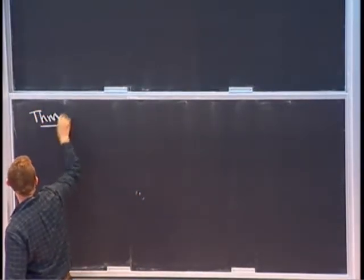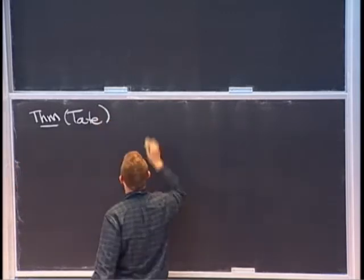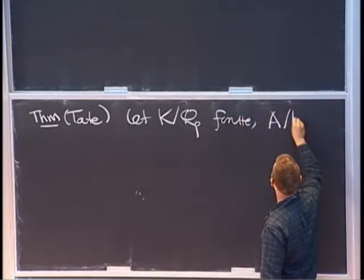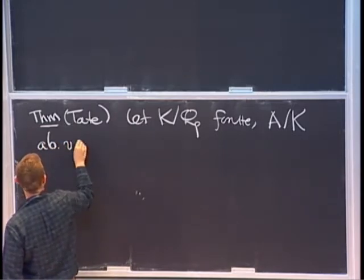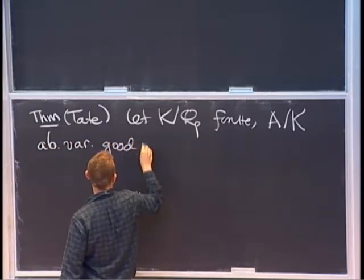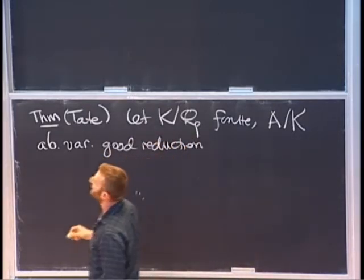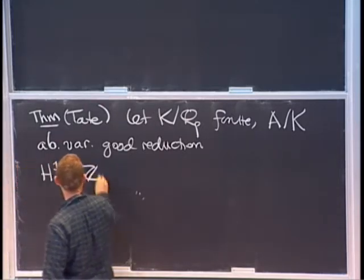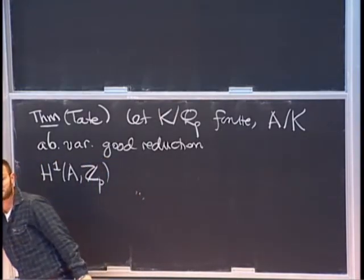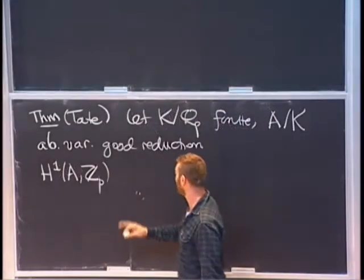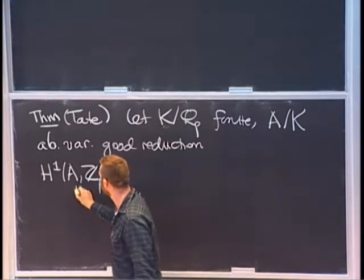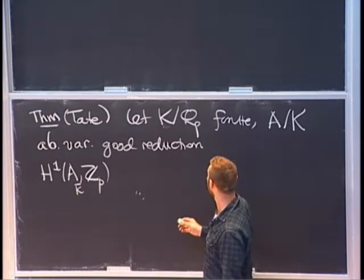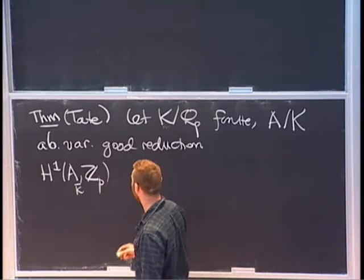Here's Tate's theorem. Let K over ℚ_p be finite, and let A over K be an abelian variety with good reduction. Then it's going to be the analog of the statement about H¹. So it's about H¹ of A with coefficients in ℤ_p, but we know that's just dual to the Tate module. This is a very interesting Galois module — I should put a K̄ here, base change to K̄ first — so the thing has an action of the Galois group of K̄ over K. I take this and do the analog of tensoring with ℂ; I tensor with C_p. Let C be the completion of an algebraic closure of K.